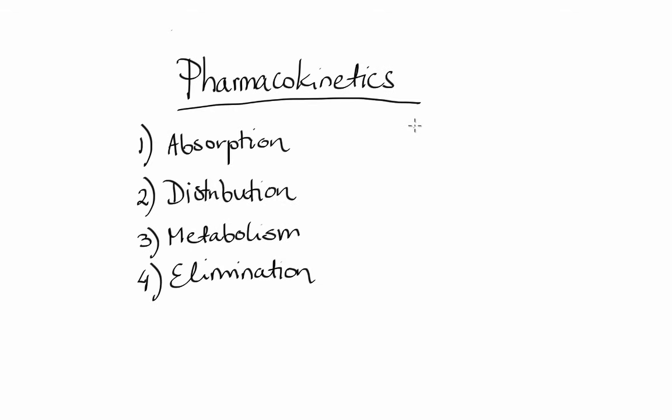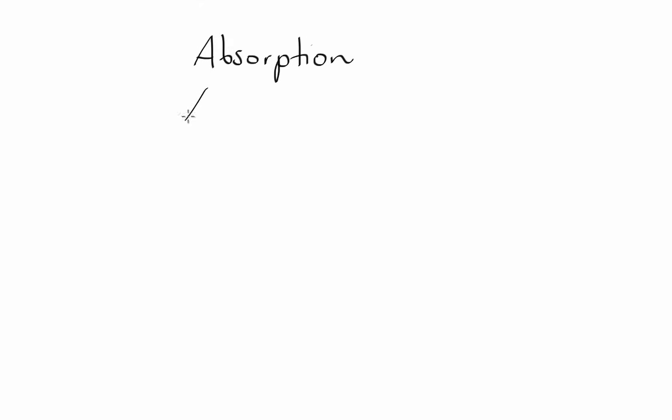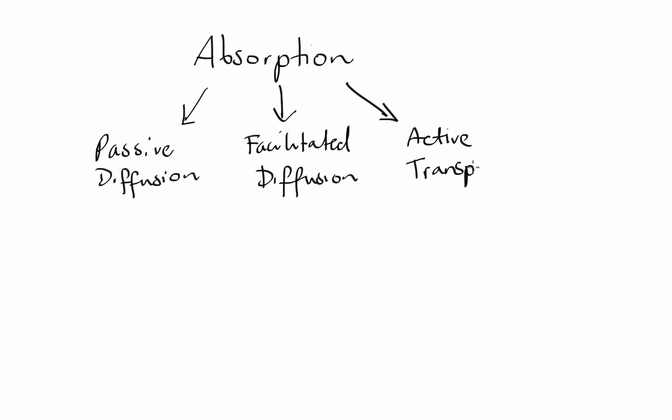There are many routes by which we can administer a drug, such as parenteral, topical, nasal, rectal, etc. But unless the drug is given IV, it must cross cell membrane before it gets into systemic circulation. Absorption of drugs can happen in four different ways: first, through passive diffusion; secondly, through facilitated diffusion; thirdly, through active transport; and finally, through endocytosis. So let's talk about passive diffusion first.